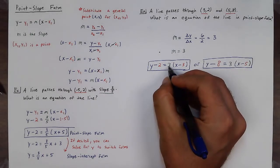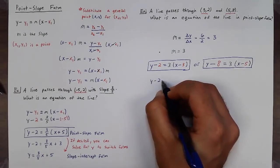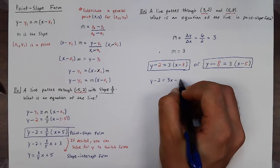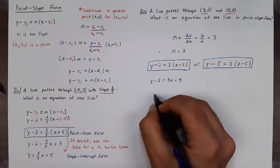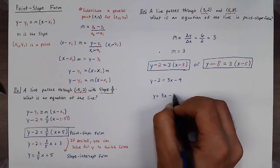I'm going to first start by distributing the three in the left equation. So I have y minus two is equal to three x minus nine. Then adding two, giving me y is equal to three x minus seven.